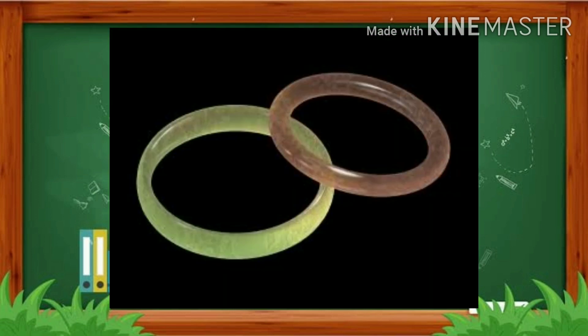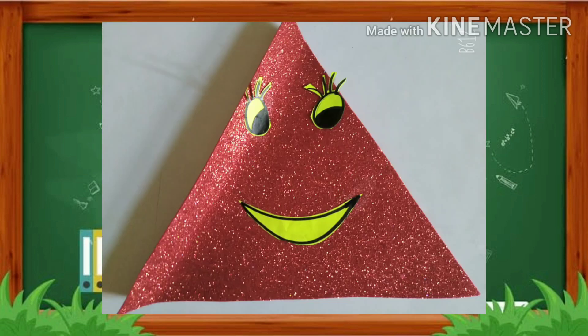What is the shape of a bangle? The shape of a bangle is also circle in shape. And what is the name of this shape? It is a triangle. How many sides are there in a triangle? One, two, and three — there are three sides.